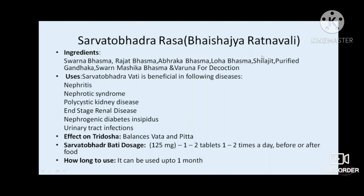Sarvato Bhadra Rasa is mentioned in Bhaishajya Ratnavali and is also used as a rasayana in chronic kidney disease. It contains Swarna Bhasma, Rajata Bhasma, Abhraka, Loha, Shilajit, Gandhaka, and Swarna Makshika. Its indications are nephritis, nephrotic syndrome, polycystic kidneys, end-stage renal disease, nephrogenic diabetes, and urinary tract infection. It is given in a dose of 125 mg once or twice a day.